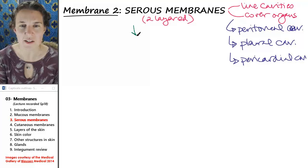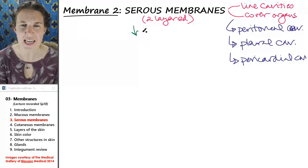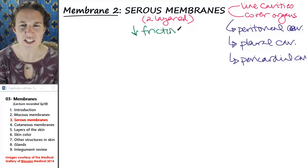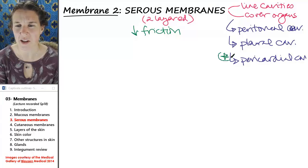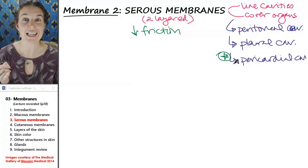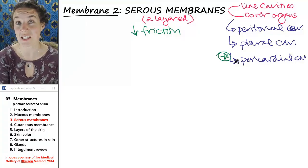The whole purpose of a serous membrane—two layers—is to reduce friction. Let's just think for a second. Think about the pericardial cavity. This is where the case is the most convincing.